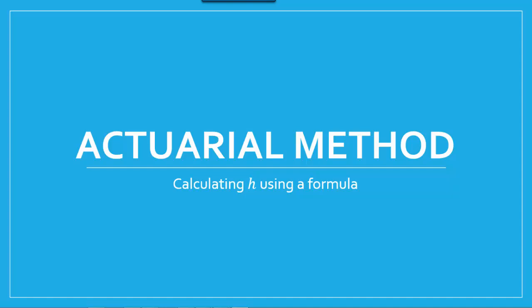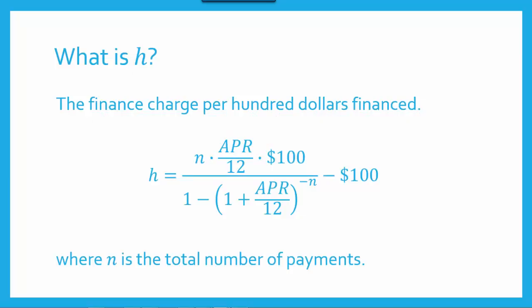In particular, we'll be calculating H using a formula rather than a table. When money is borrowed at a particular annual percentage rate and divided up into regular payments, H tells us the cost to the borrower per $100 financed, calculated using the APR and the value of N, where N is the total number of payments. H can also be found using tables of values, as long as a table with the appropriate APR and number of payments happens to be available. If it's not, we have to use this complicated formula.